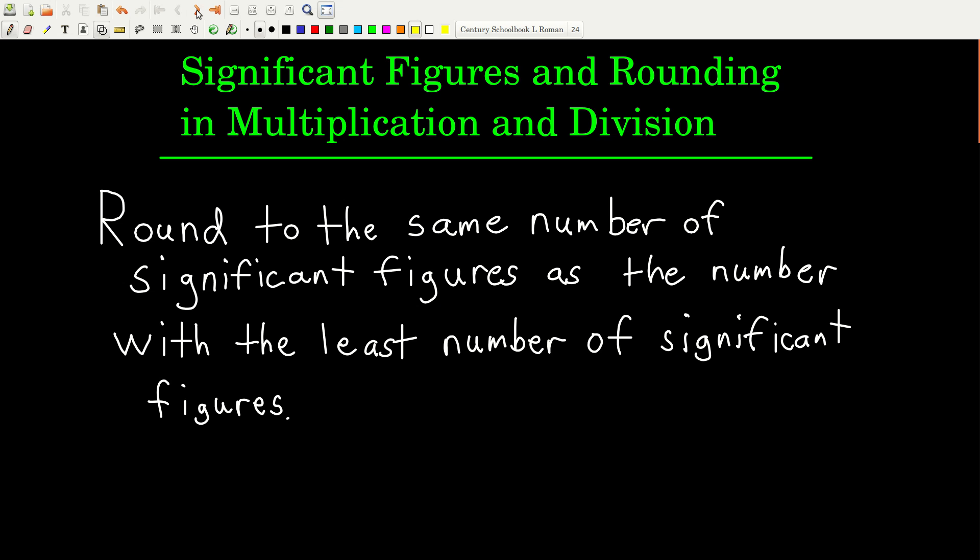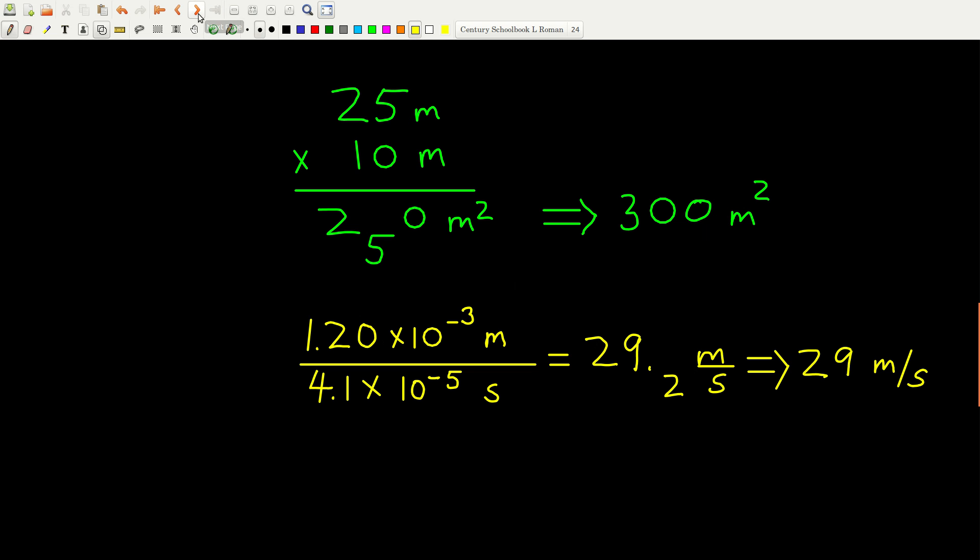All right, so let's look at a couple of examples here. Let's say we have a measurement, 25 meters, and we multiplied it by another measurement, 10 meters.